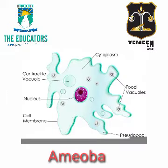One good example of protozoa is Amoeba. Amoeba has a nucleus inside and a cell membrane surrounds it, in which finger-like projections called pseudopodia are present, through which it locomotes from one place to another. Some food vacuoles are also present in it.